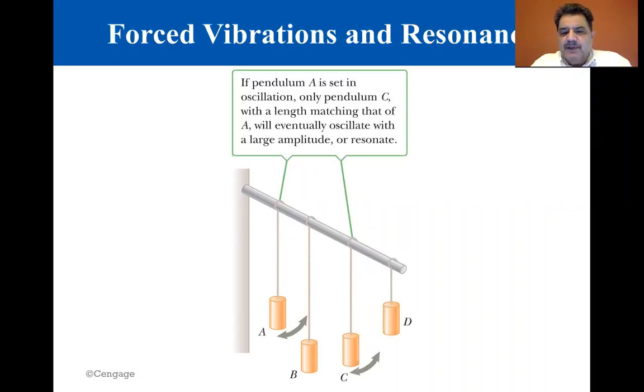For example, suppose an object-spring system having some natural frequency of vibration f sub zero is pushed back and forth by a periodic force with frequency f. The system vibrates at the frequency f of the driving force. This type of motion is referred to as a forced vibration.